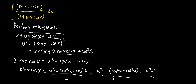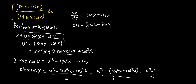We now differentiate u equals sin x plus cos x with respect to x. So we have du/dx equivalent to cos x minus sin x. We multiply both sides by dx, so we get du equivalent to cos x minus sin x dx. Then we multiply both sides by negative 1, so we have negative du equivalent to sin x minus cos x dx.